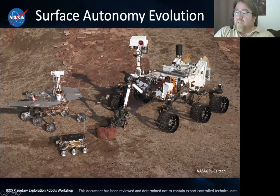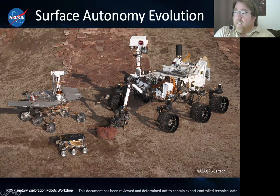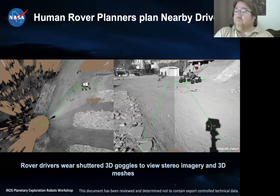JPL has been involved with four generations of Mars rovers now. We started with Sojourner in the mid-90s, and landed two MER rovers, Spirit and Opportunity, in 2004. Curiosity landed in 2012, and we're really looking forward to landing Perseverance next year. I want to summarize some of the robotics autonomy capabilities on Curiosity and also the general mobility performance.